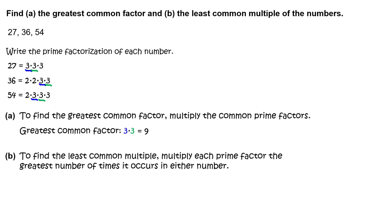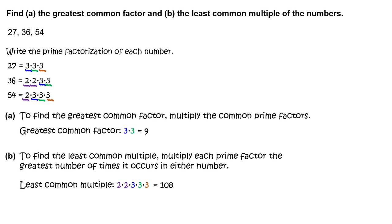Part B: to find the least common multiple, multiply each prime factor the greatest number of times it occurs in either number. So, the least common multiple equals 2 times 2 times 3 times 3 times 3, which equals 108.